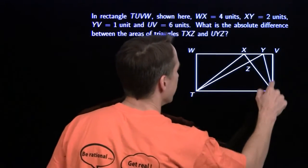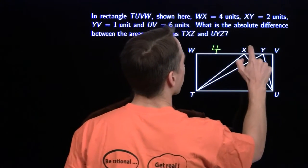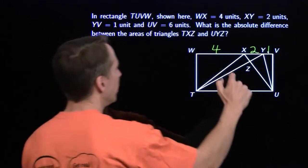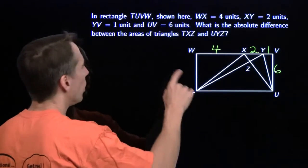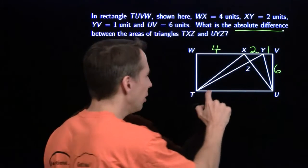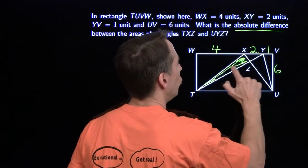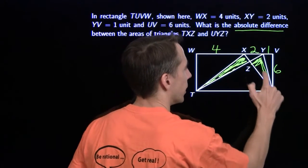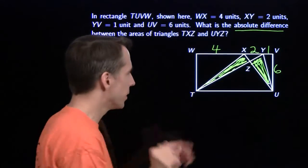We've got a rectangle TUVW. WX is 4, XY is 2, YV is 1. UV is 6, and this is definitely not to scale. We want the absolute difference between the areas of triangle TXZ — that's this little triangle right here — and triangle UYZ, which is this triangle over here. So I just find the areas of these two triangles, then subtract, and then we'll be finished.